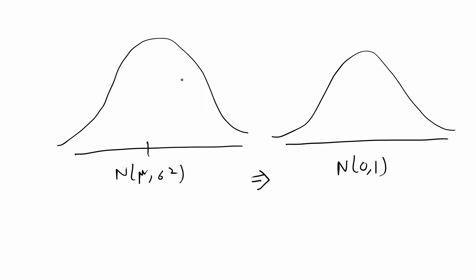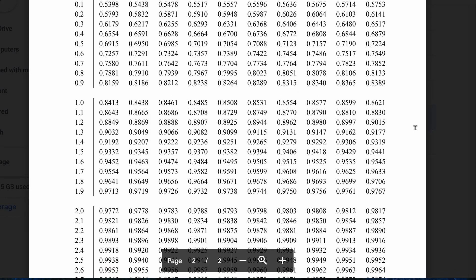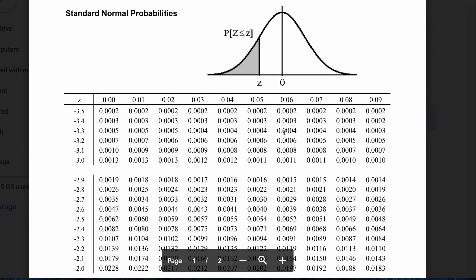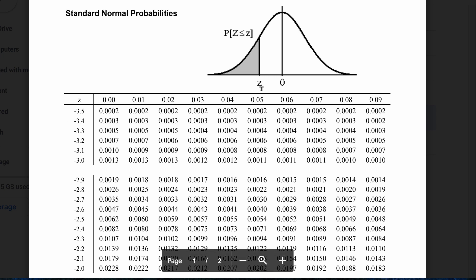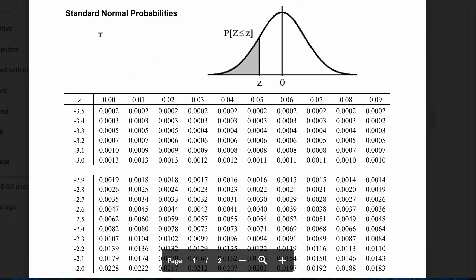The main reason you're going to want to do this conversion from a normal to a standard normal is usually if you're taking a statistics class where you have to use a statistics table. I have a sample statistics table here — I will put a link in the description box below for this table — and this is one way of getting the probability or the z-score from any normal distribution. You usually will use a table like this which has the values for a standard normal distribution.